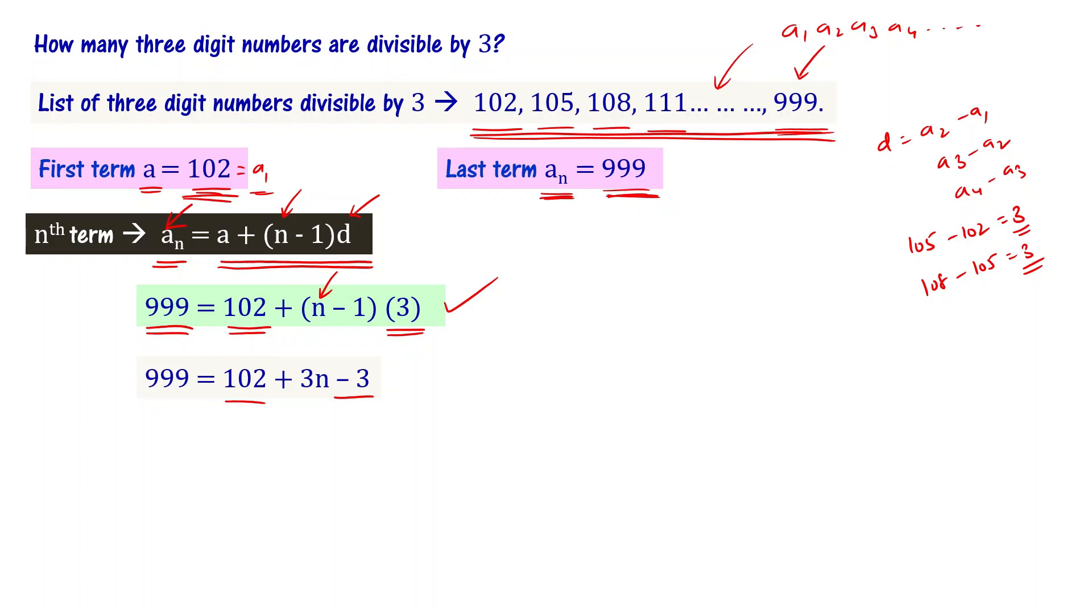So 999 equals 102 plus 3n minus 3. Combining 102 and minus 3, the equation becomes 999 equals 99 plus 3n.